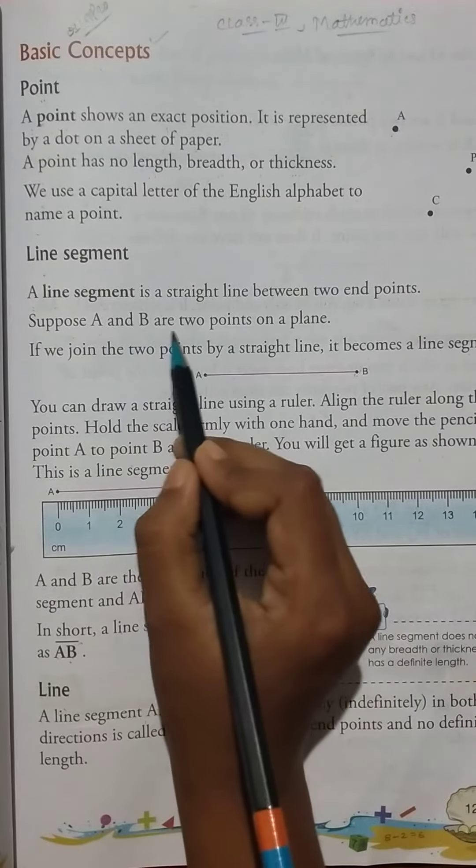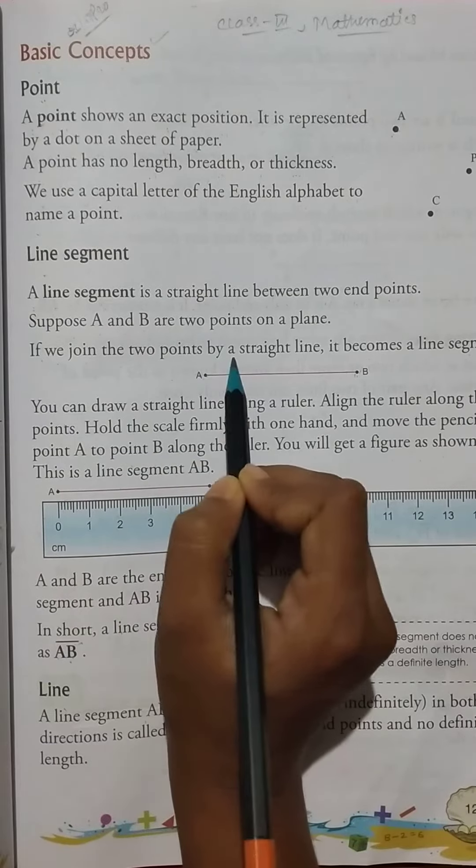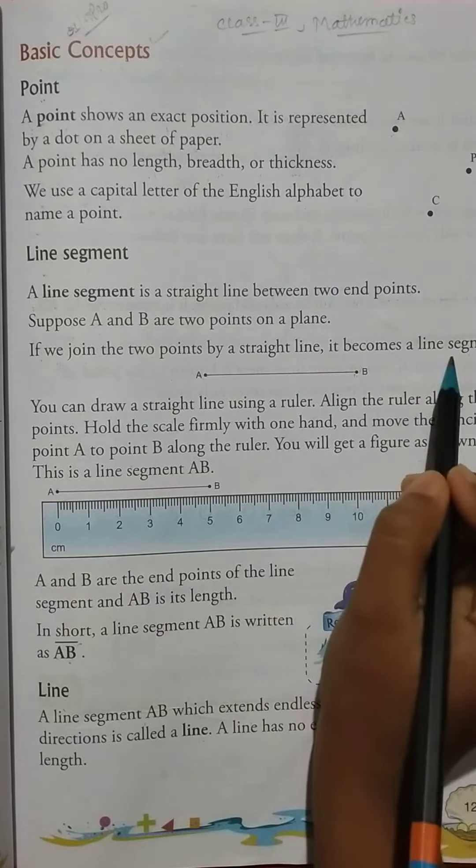Suppose A and B are two points on a plane. If we join the two points by a straight line, it becomes a line segment.